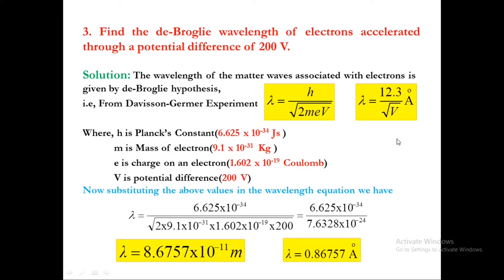We can also use this alternative formula. Both formulas are one and the same. In this case, h divided by square root of 2me calculated separately gives 12.3 angstroms. The only thing we need to substitute is V: lambda equals 12.3 divided by square root of V angstroms. You can verify this yourself.